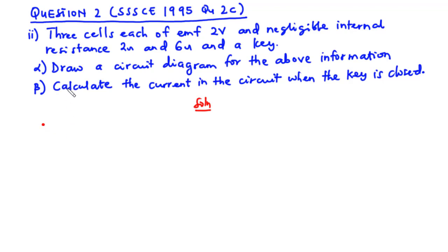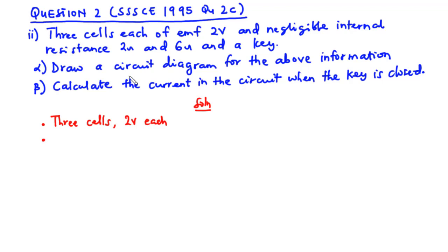Let's write down the information we derive from the question. We are told we have three cells each of EMF 2 volts, negligible internal resistance (so we won't consider that), two resistors where R1 equals 2 ohms and R2 equals 6 ohms, and also a key.